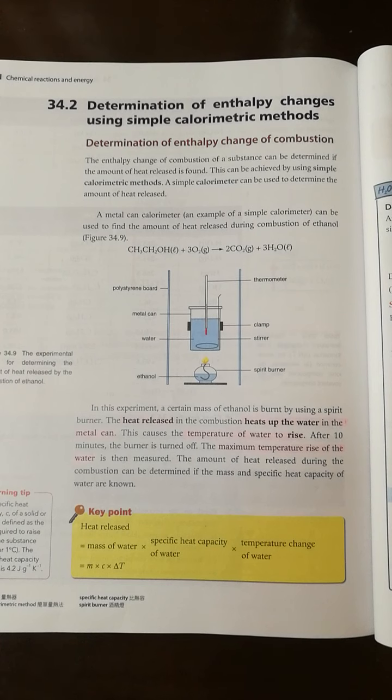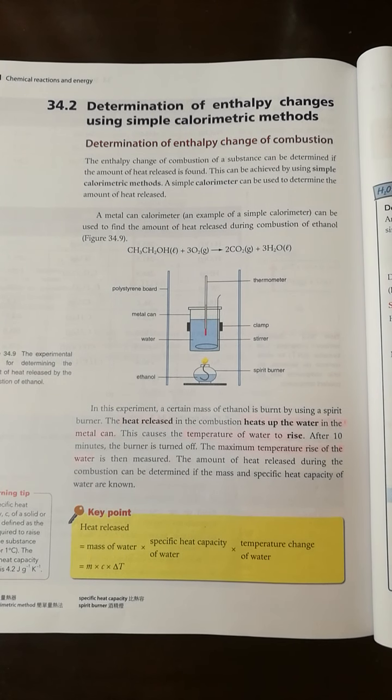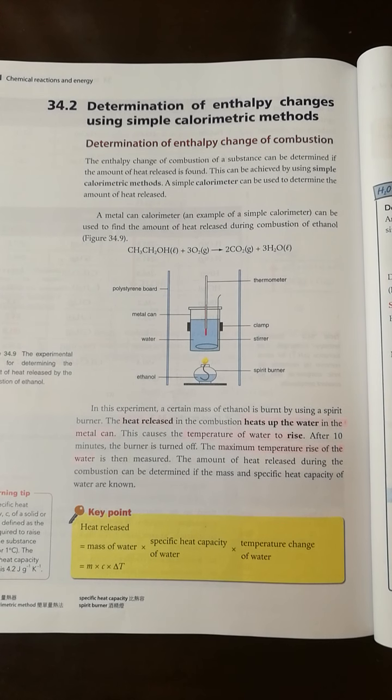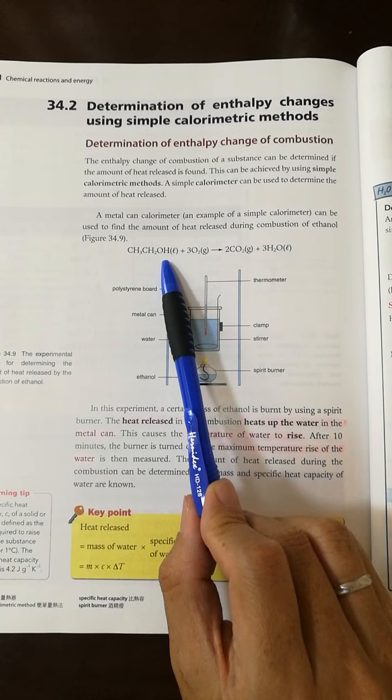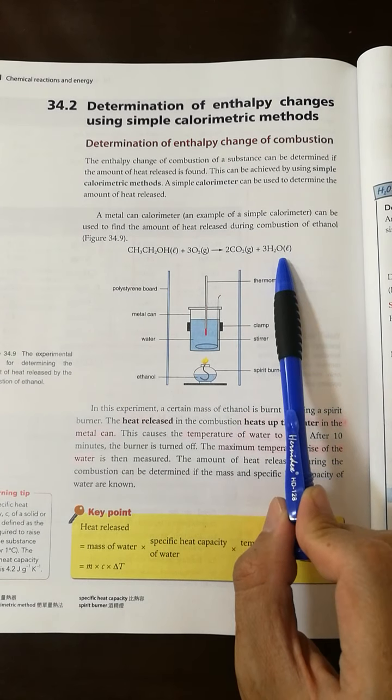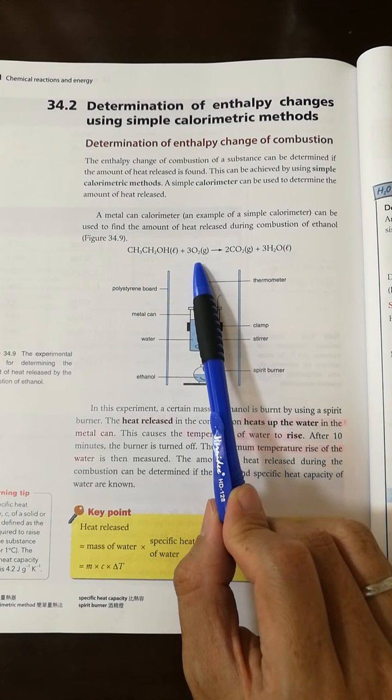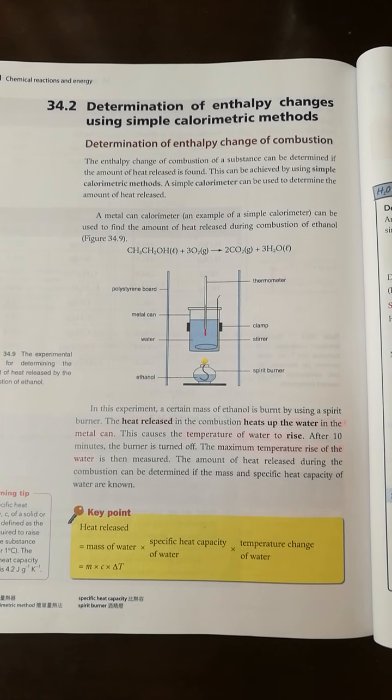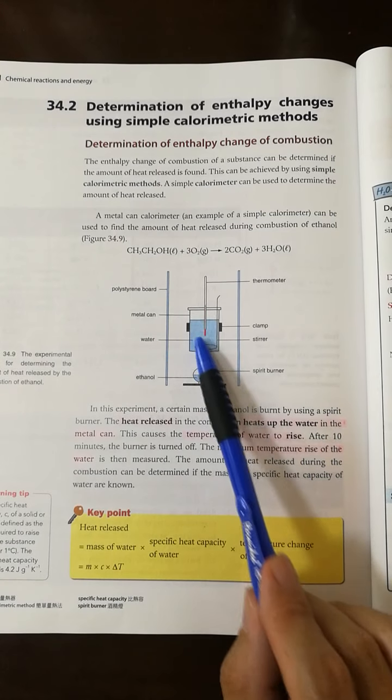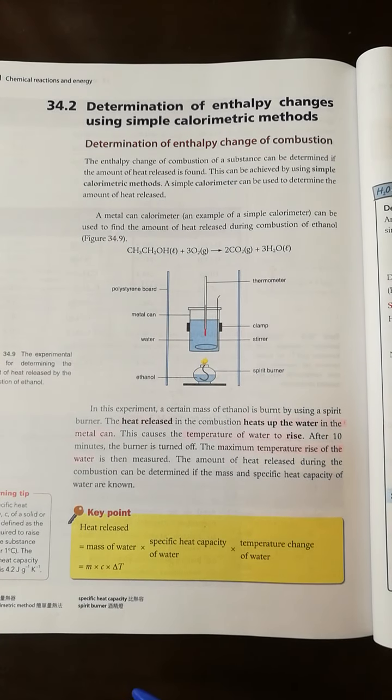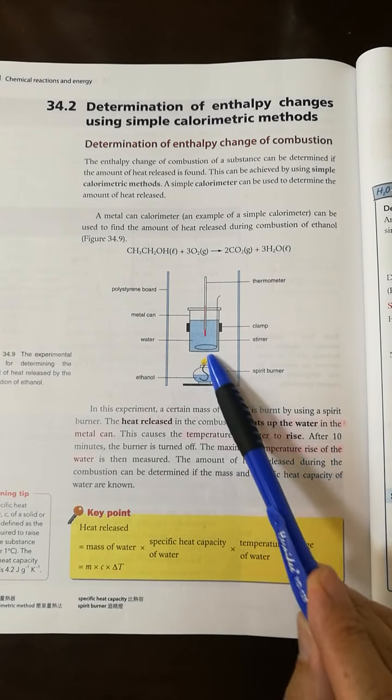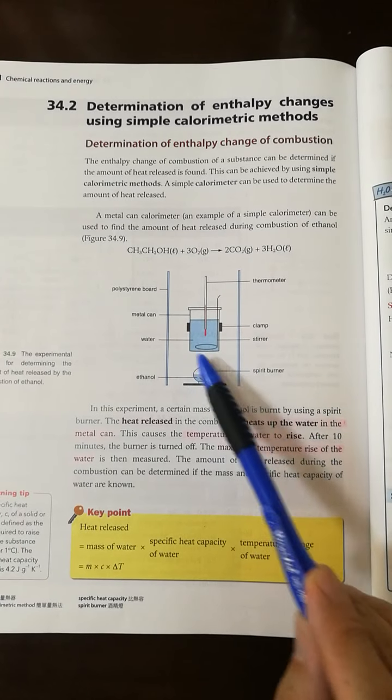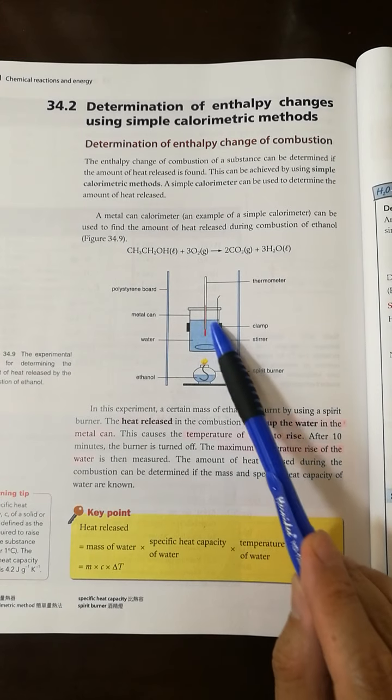And then page 14 is about the experiment to determine the delta H combustion. We know that the combustion, example ethanol, burns in oxygen forming carbon dioxide and water. It burns and releases heat. We measure the heat released by water. So at the bottom we have the substance ethanol and allow it to burn in oxygen. Heat released and the heat is used to heat up the water.